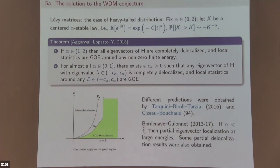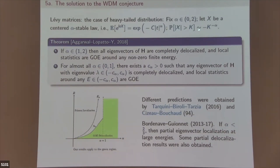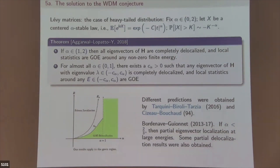The 2 + ε moment condition in the bulk is not really the transition line — you can go lower. There is a conjecture related to the tails of the random variable. Roughly speaking, P(X > k) ~ k^{-α}. Below α = 2 you can go all the way down to α = 1. Once you go below 1 there is a line where we can prove GOE statistics still hold inside.